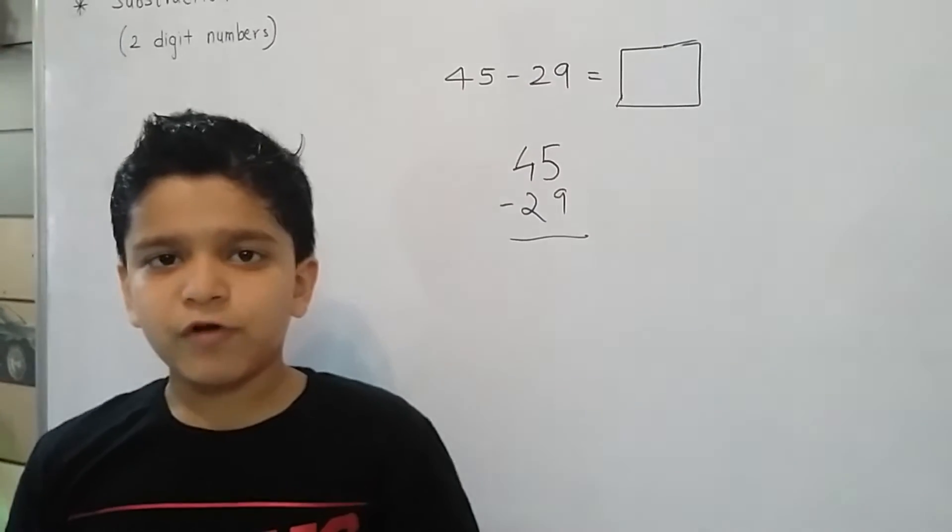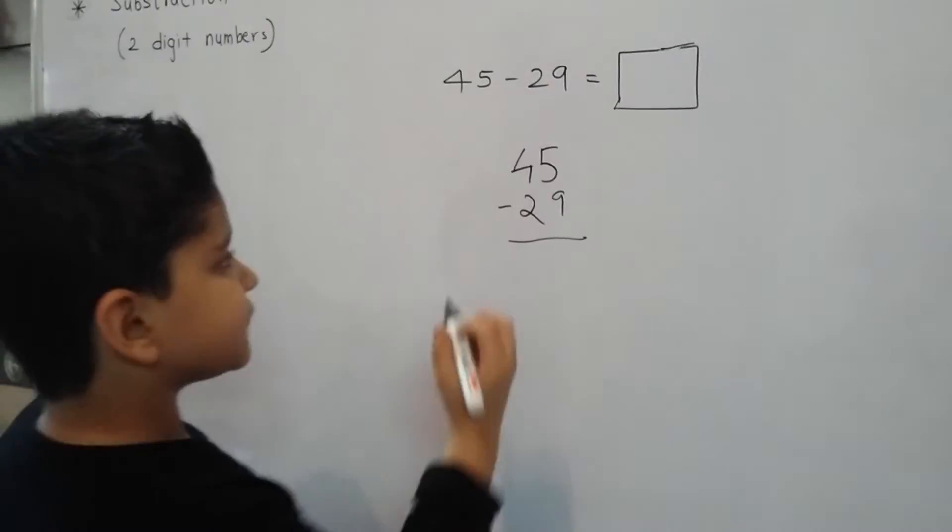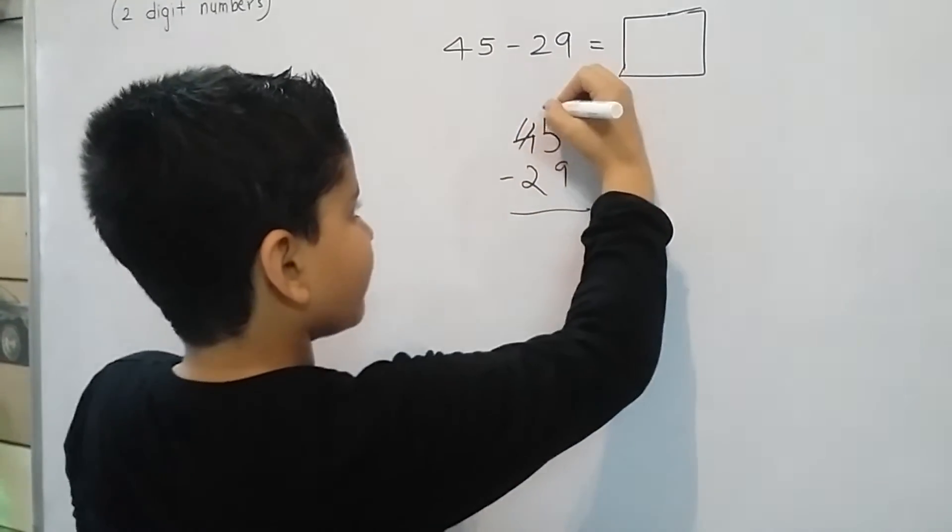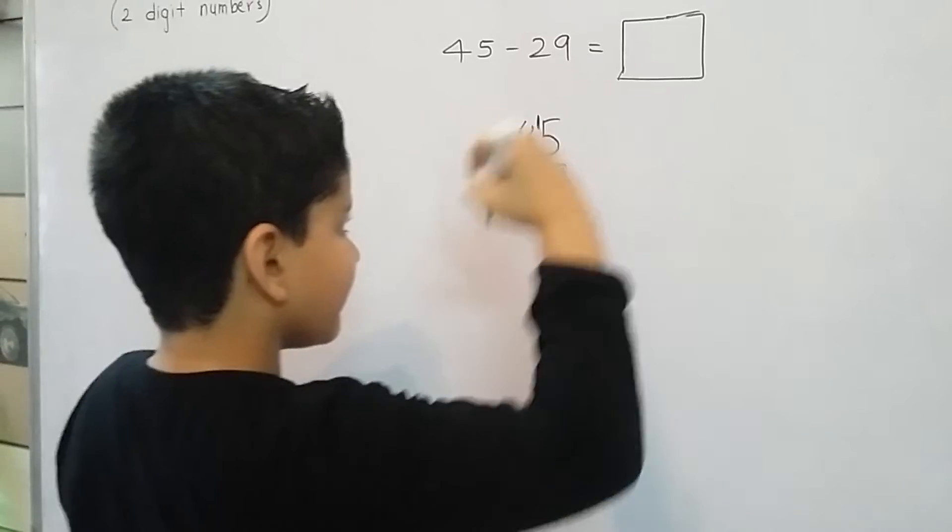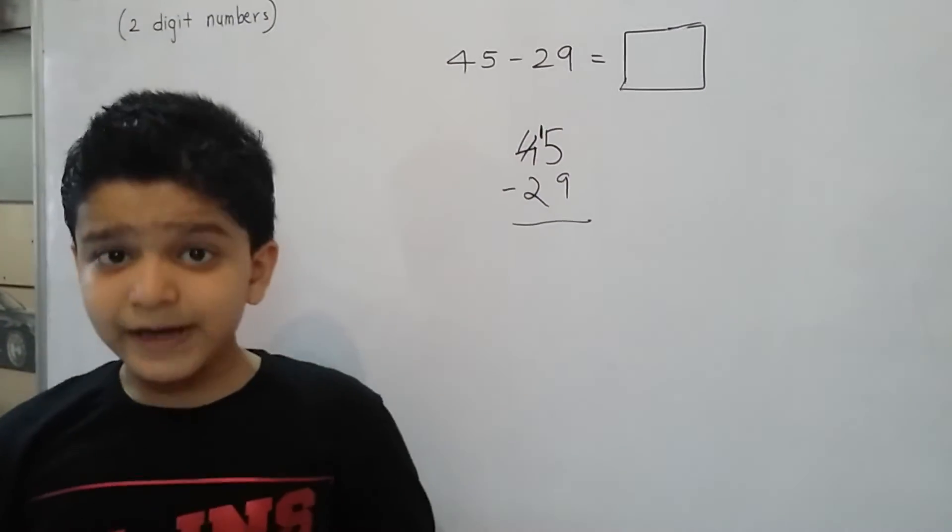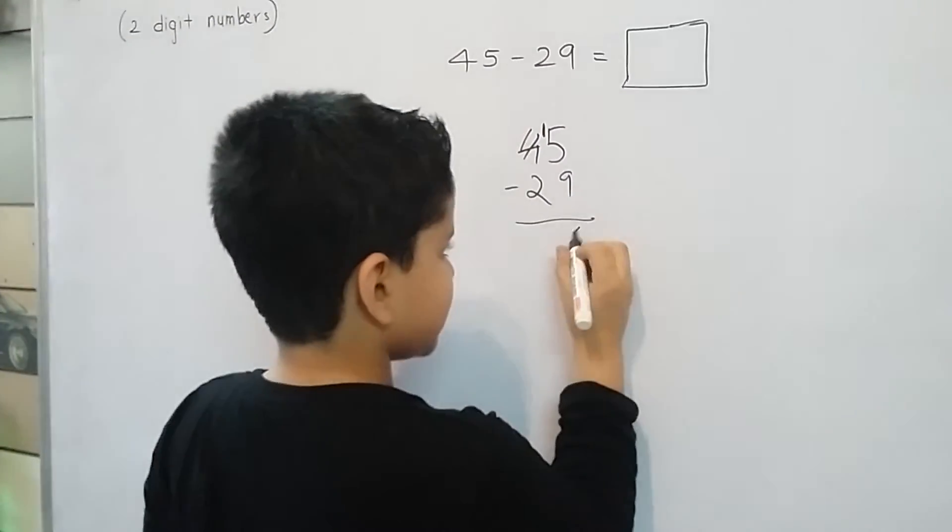Can we subtract 9 from 5? No. So this 4 will give a 1 to 5 making it 15. 15 minus 9 is equal to 6.